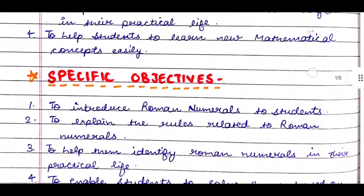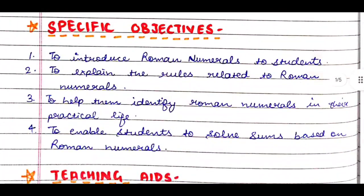After general objectives, the next heading is specific objectives. These are related to the topic that we are teaching. As the topic changes frequently, these also need to be changed according to the topic, so they cannot be copied. These are basically the aims—what are our aims to teach that particular concept to students. First: to introduce Roman numerals to students. Second: to explain the rules related to Roman numerals. Third: to help them identify Roman numerals in their practical life. Fourth: to enable students to solve sums based on Roman numerals.